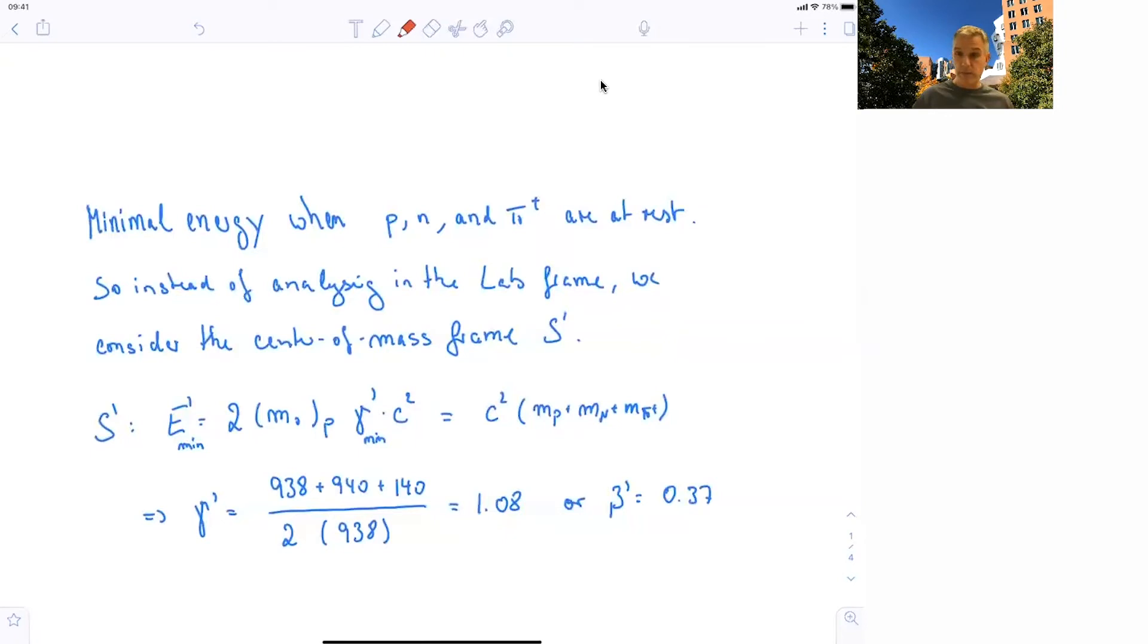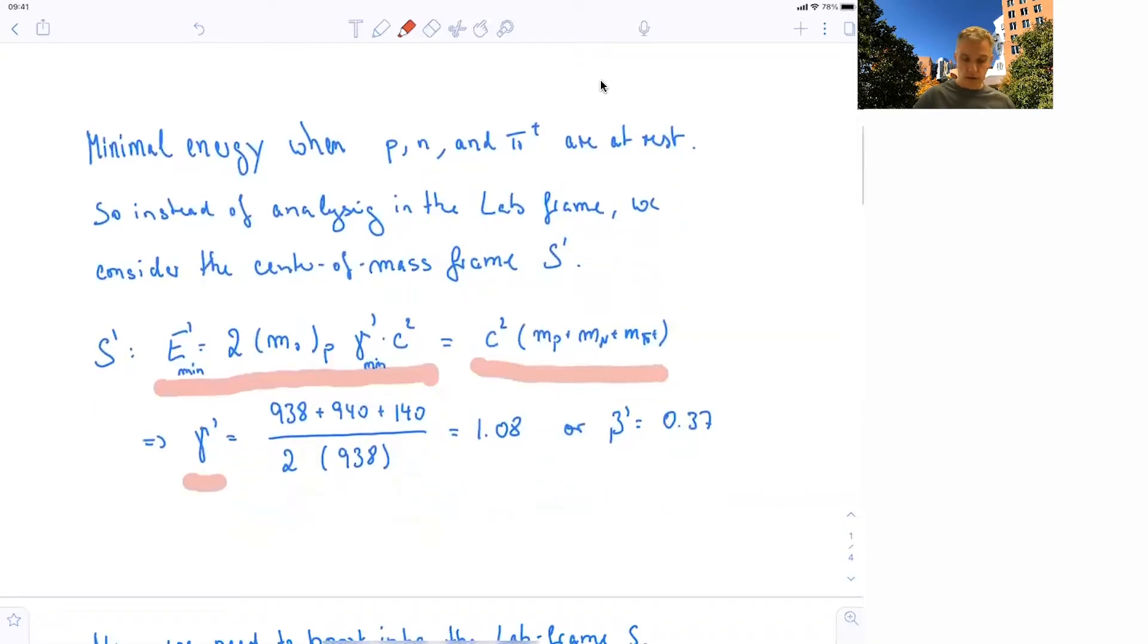Here, so in this S' frame, here S' is the center of mass frame. The energy, the minimal energy required, is two times the mass of the proton times gamma. So here those two protons are colliding with the velocity. And that's then equal to the energy after this process, C squared times the sum of the masses, the mass of the proton, the neutron, and the charged pion. And then you just have to solve this for gamma to find gamma equal to 1.08, or beta in this frame of 0.37.